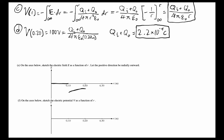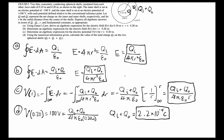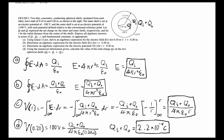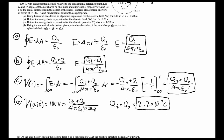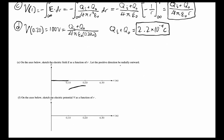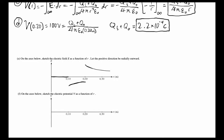From r greater than 0.2 meters, we use the expression from part b, also a 1/r² curve. The outer shell has a potential of positive 100 volts, so electric field lines point outward — the positive direction. So we draw a positive 1/r² curve for this region.